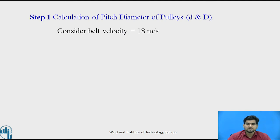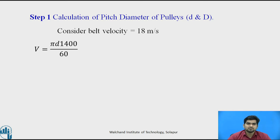Consider the belt velocity as 18 meters per second and calculate small d. Using the formula V = π·d·N₁ / 60, put in the value of N₁ (1440 rpm) and you will get the diameter of the smaller pulley as 238.73 mm.